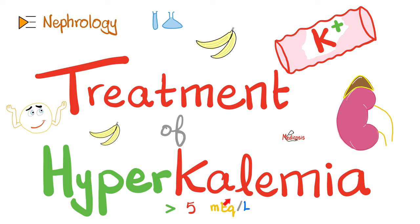What's the normal serum potassium concentration? It is between 3.5 and 5 milliequivalents per liter. Above 5 is called hyperkalemia. Whose job is to get rid of excess potassium? The kidney. But what if I have kidney disease? Of course, I will be more likely to develop hyperkalemia.